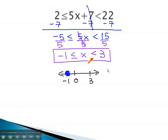At 3, because it's strictly less than, we will use an open dot. Because x is between these values, we will graph between those values on the number line.